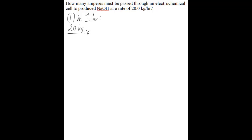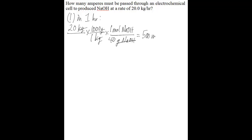The first thing you want to do to solve this type of problem is figure out the moles of NaOH produced in one hour. In one hour, you have 20 kilograms of NaOH. Convert that to grams: in one kilogram there are 1,000 grams. To find moles, one mole of NaOH has 40 grams of NaOH. The grams cancel, the kilograms cancel, and you're left with 500 moles of NaOH being produced in one hour.